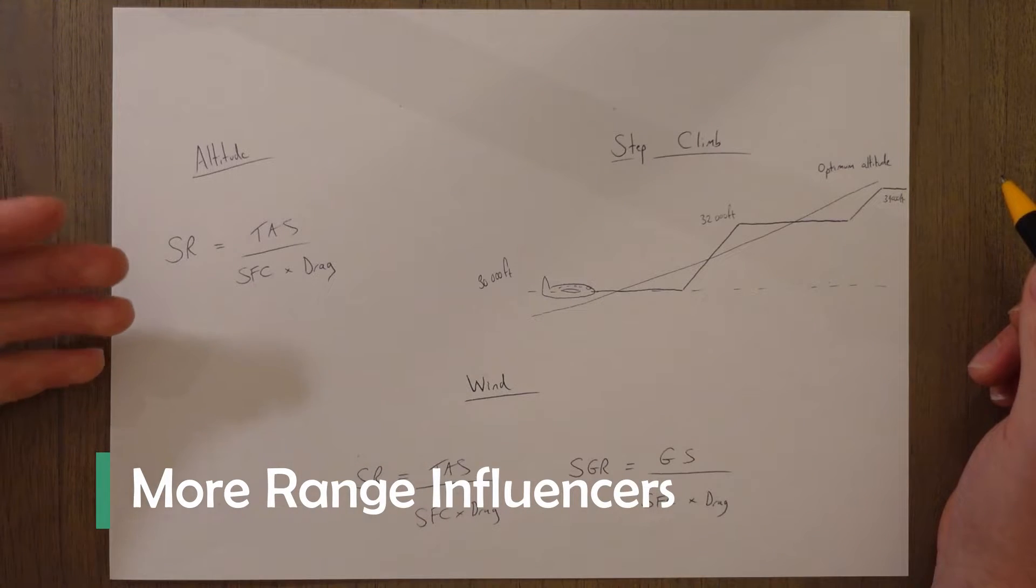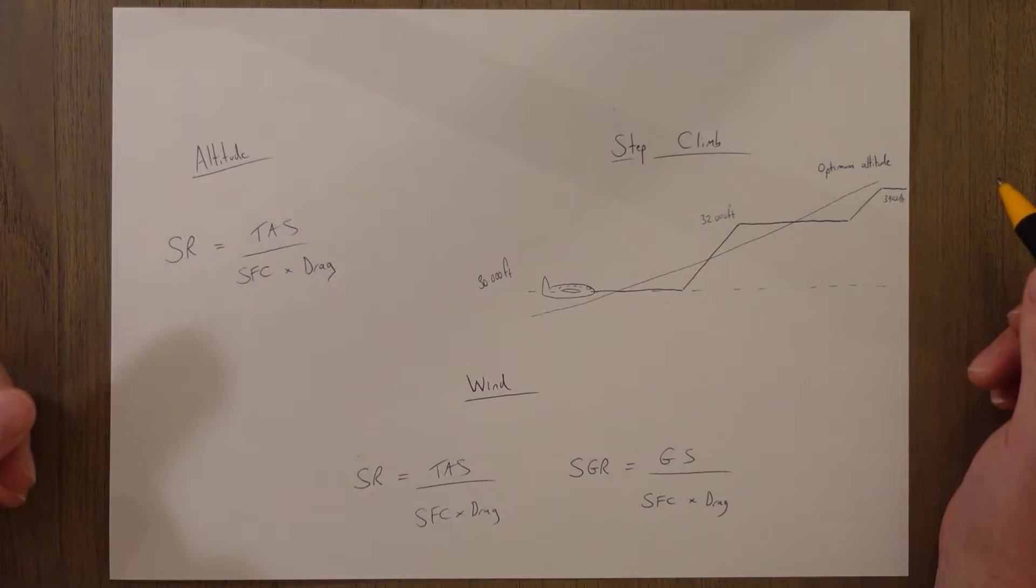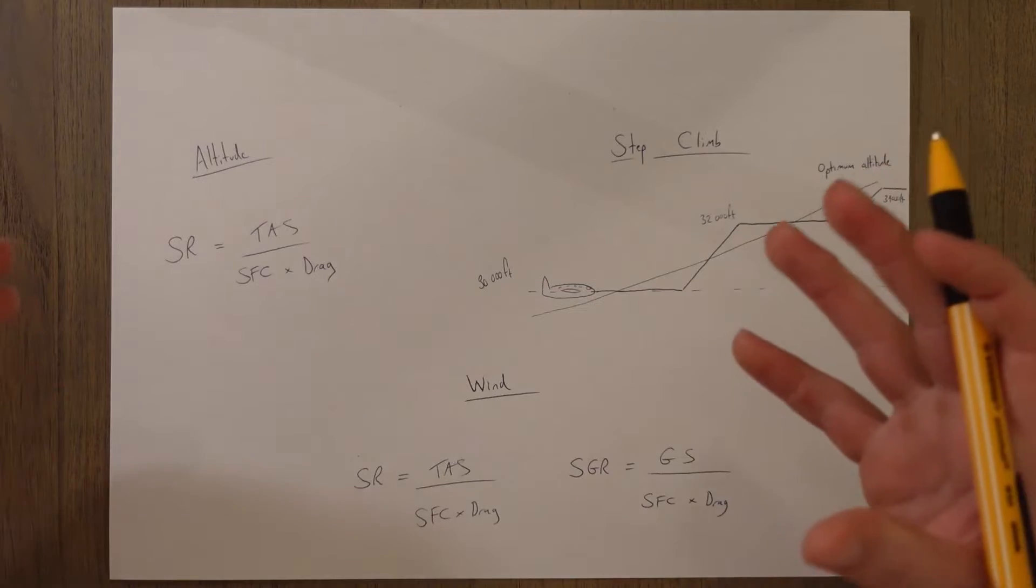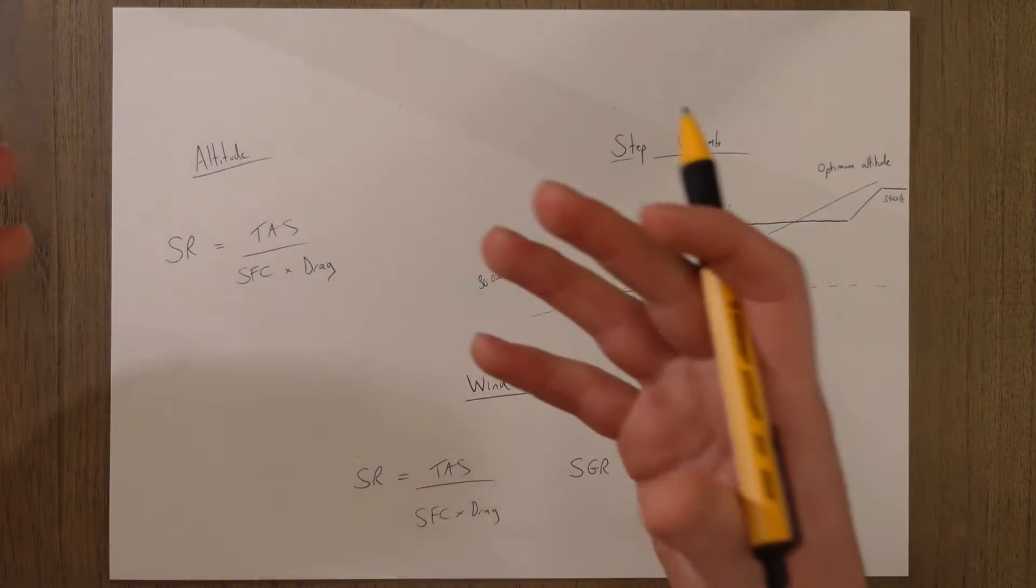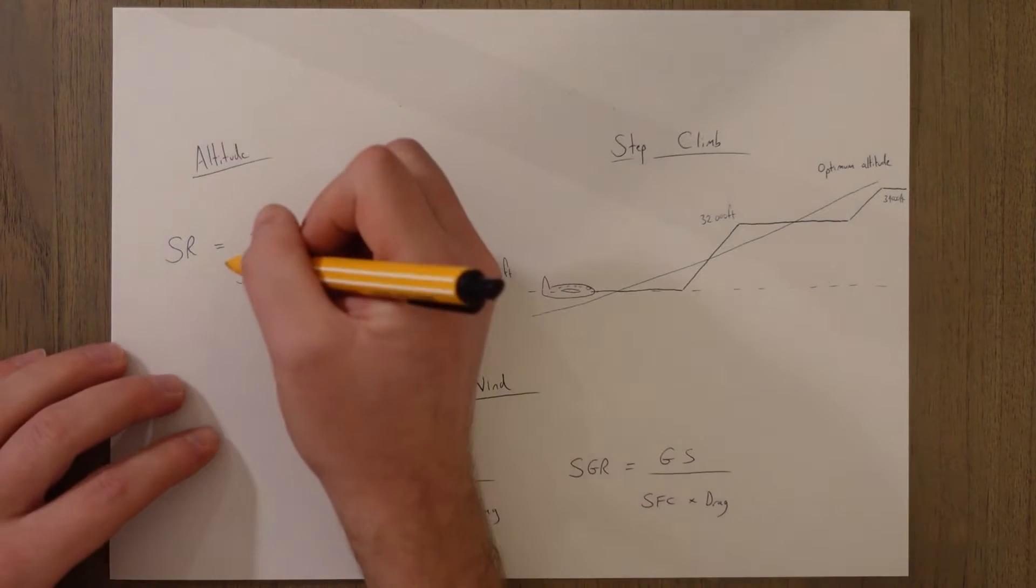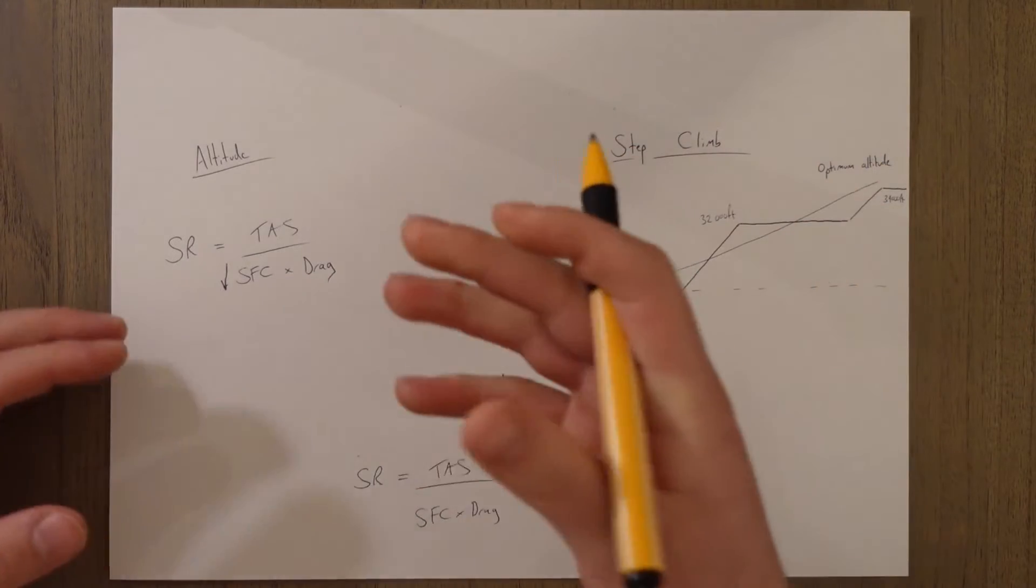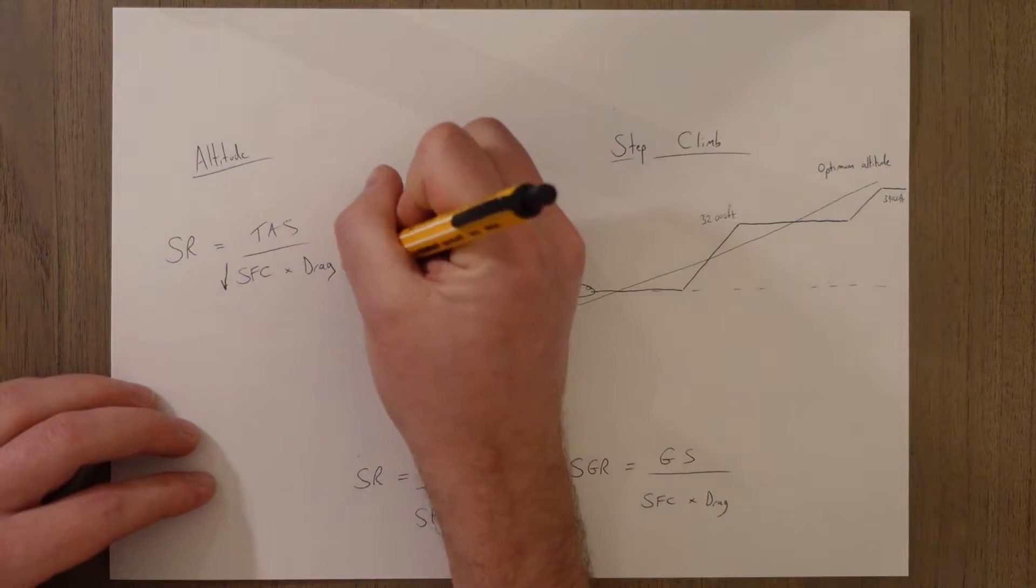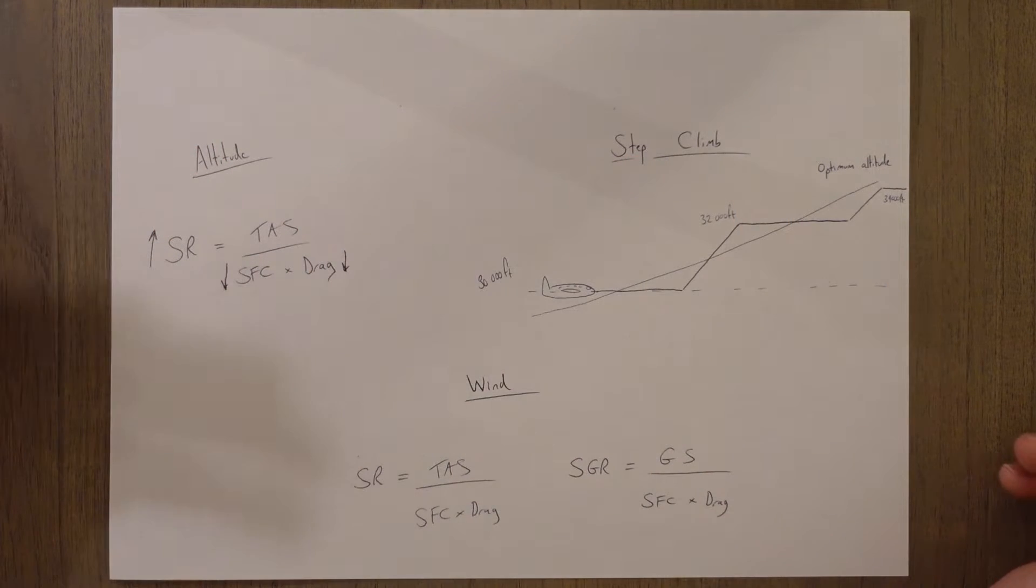If an aircraft is flying at its optimum altitude, the range will be maximized. This optimum altitude in a turbojet is high up. Basically, the engines are running at their designed RPM because they're designed to cruise - because that's where they spend most of their time. And that's where they are most efficient, making the specific fuel consumption low. And also up at altitude, the air is less dense, meaning drag is lower. So our specific range goes up, and our specific ground range would go up as well.